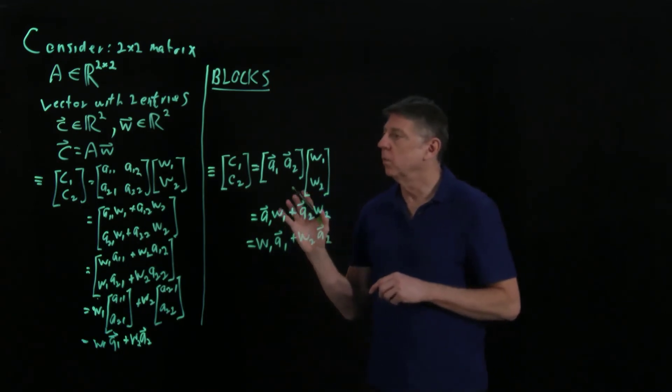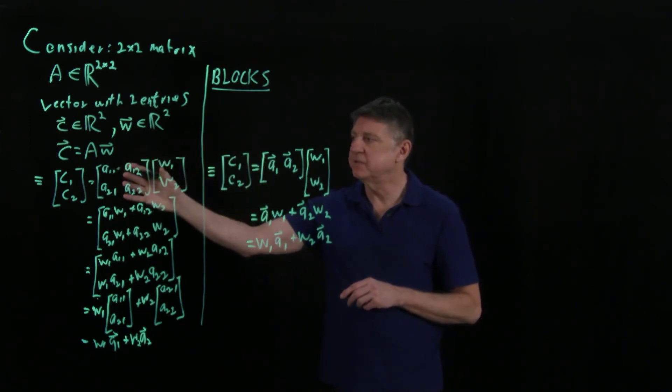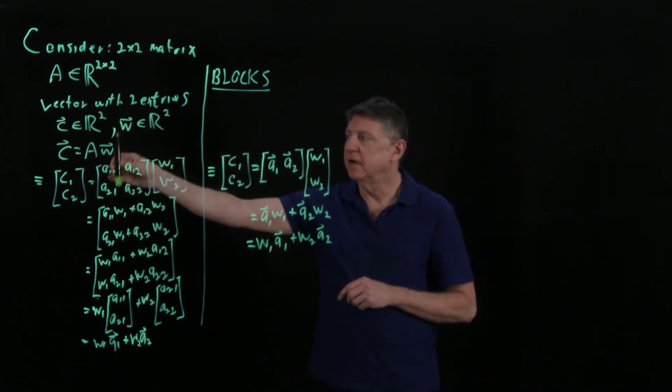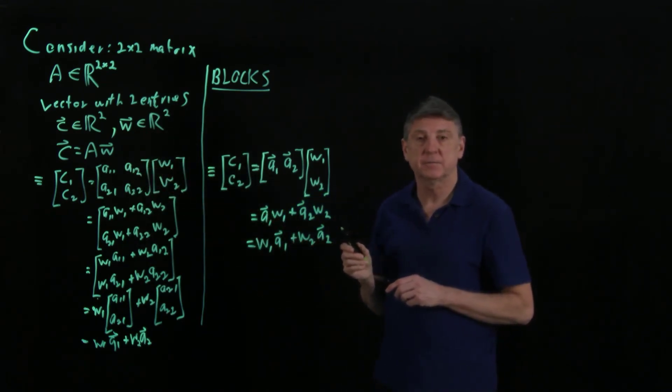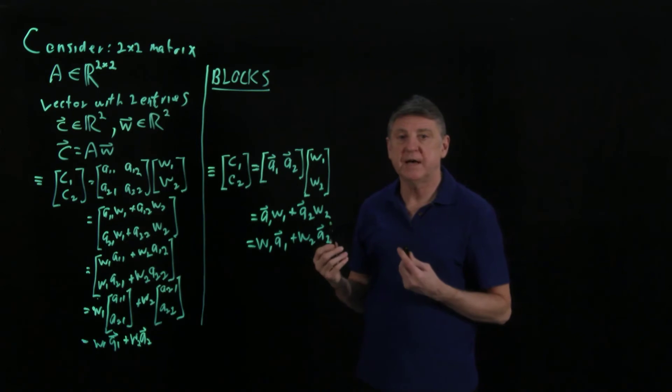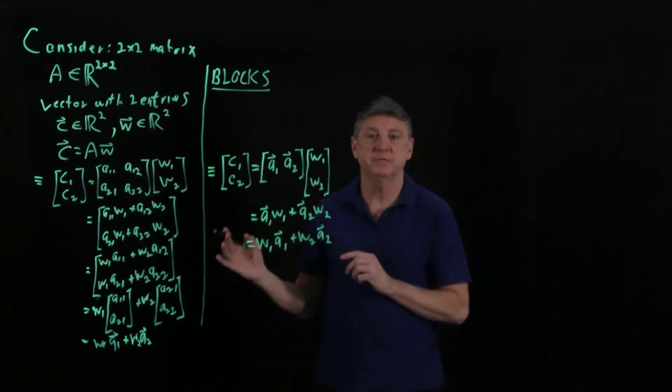And so, what I can do is I can start to treat a matrix as being an ordered set of columns, and each column is itself a vector. And when I do that, what it does is it starts to partition a matrix vertically.